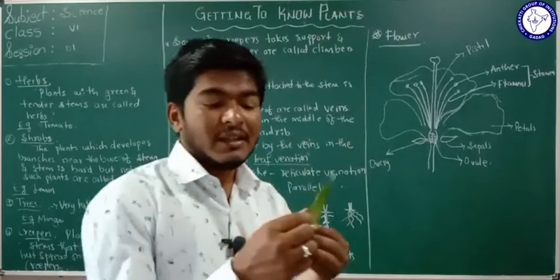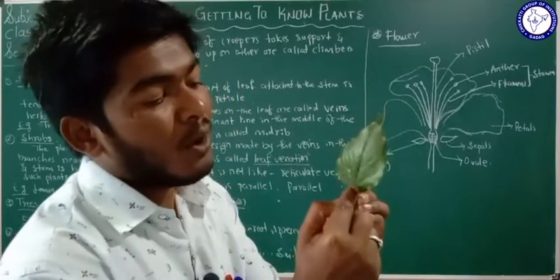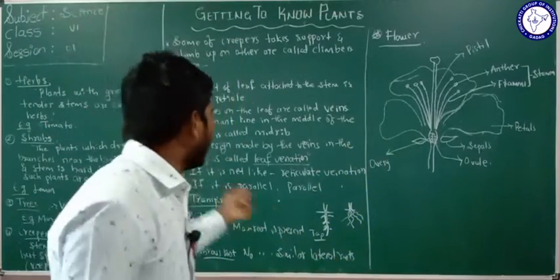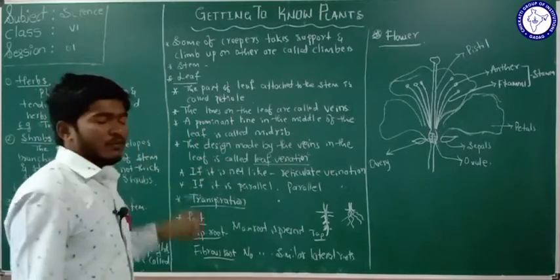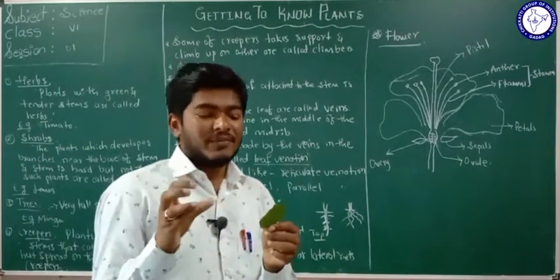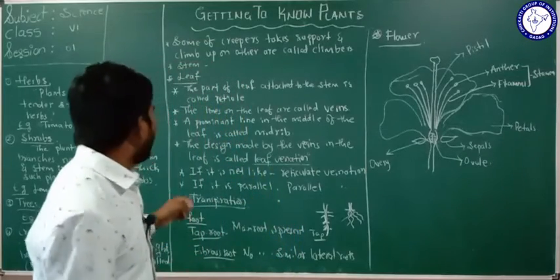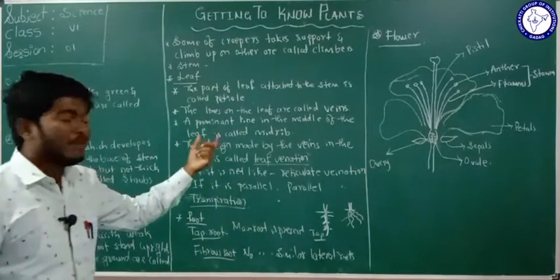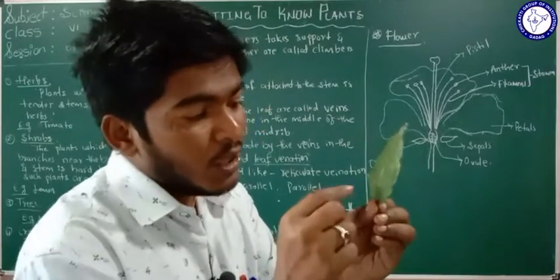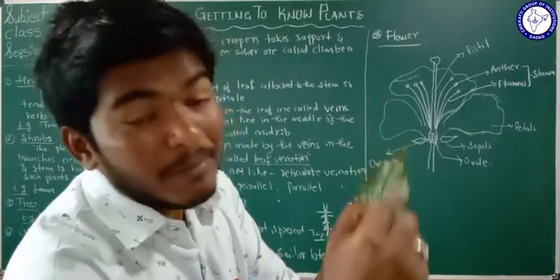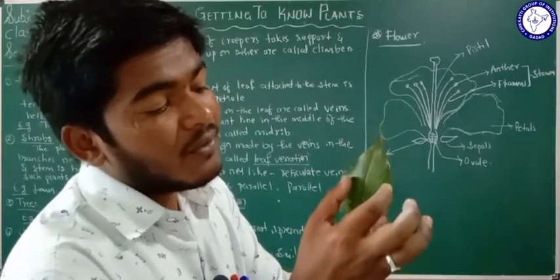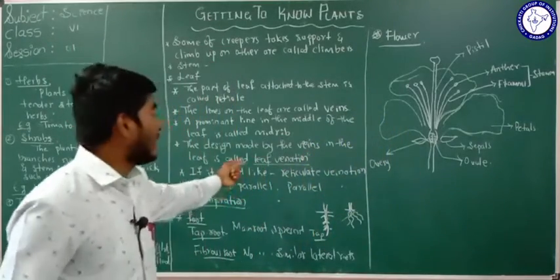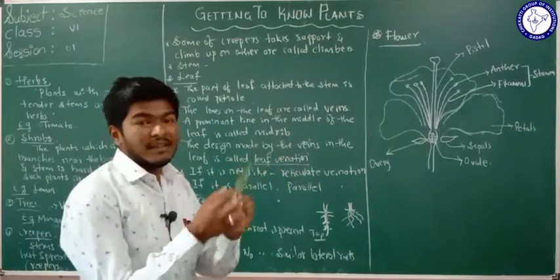A prominent thick line is present at the middle part of the leaf, and this line is called the midrib. The structure of the leaf varies due to the veins and the midrib. Many veins are present on the leaf, and the design made by these veins is called leaf venation.